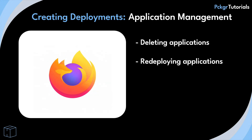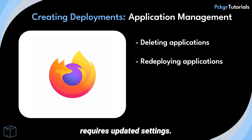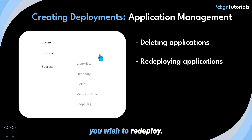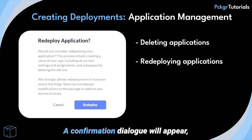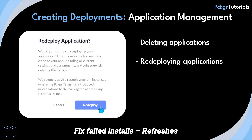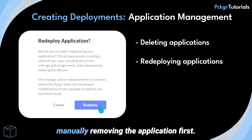Redeploying applications. Redeployment is useful when an application installation fails, needs refreshing, or requires updated settings. Find the application you wish to redeploy, click the three-dot menu and select Redeploy. A confirmation dialog will appear explaining the process of redeployment. You can check the status in Packager or verify in Microsoft Intune. Why redeploy? Fix failed installs: refreshes deployments for devices with failed installations. Apply new settings: implements updated configurations without manually removing the application first.